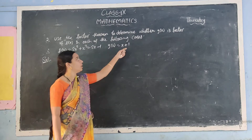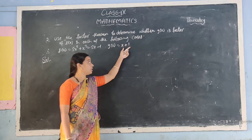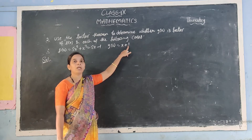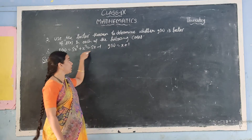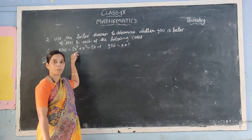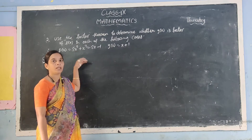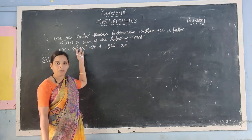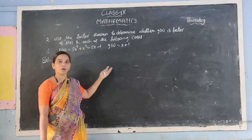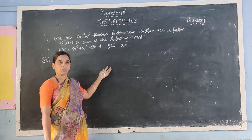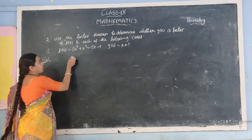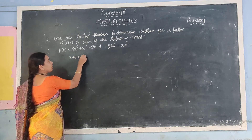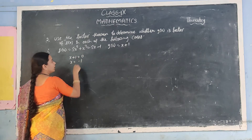Same way here also. So x plus 1 — x plus 1 means substitute x = minus 1. Then minus 1 is substituted in the place of x. Suppose you get the answer 0, then only you can conclude that g(x) is a factor of p(x). Otherwise it is not a factor. Let us see. First, g(x): x plus 1 is equal to 0, so x is equal to minus 1.